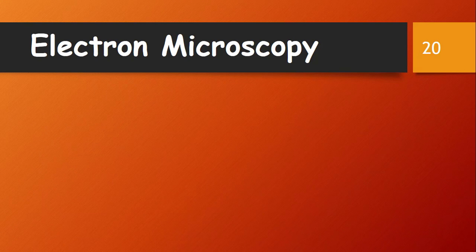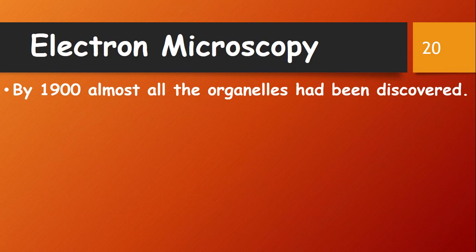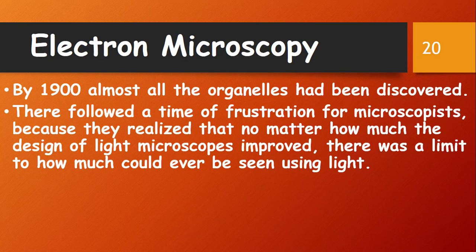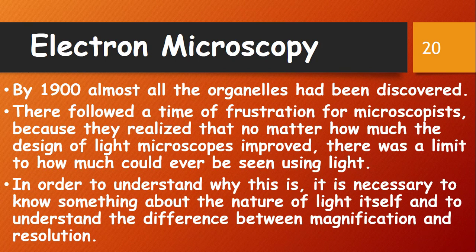The electron microscope uses beams of electrons, which have a much smaller wavelength than visible light, and therefore can observe specimens much smaller than those seen with a light microscope. By 1900, almost all organelles had been discovered, but microscopists reached a frustrating limit — no matter how much the design of the light microscope improved, there was a limit to how much could ever be seen using light. To understand why, it is necessary to know about the nature of light and the difference between magnification and resolution.